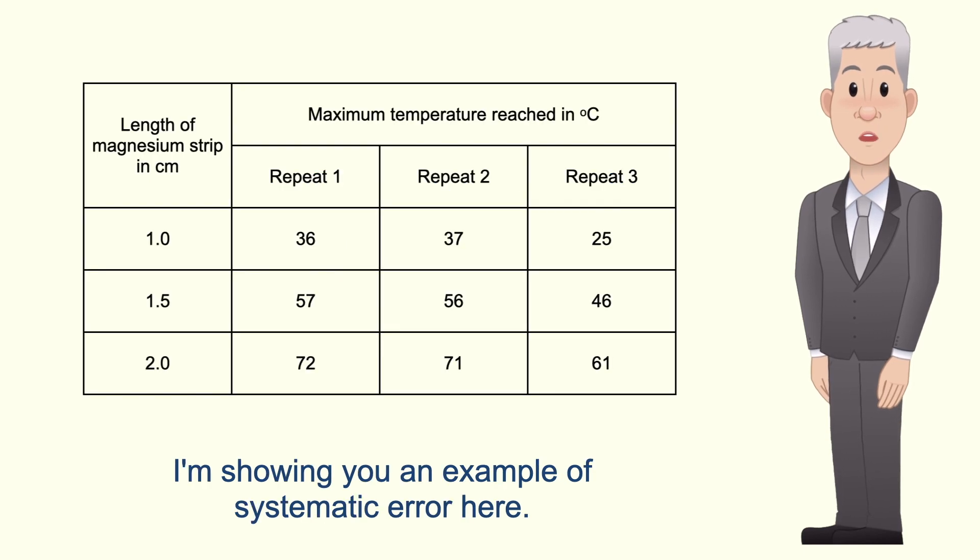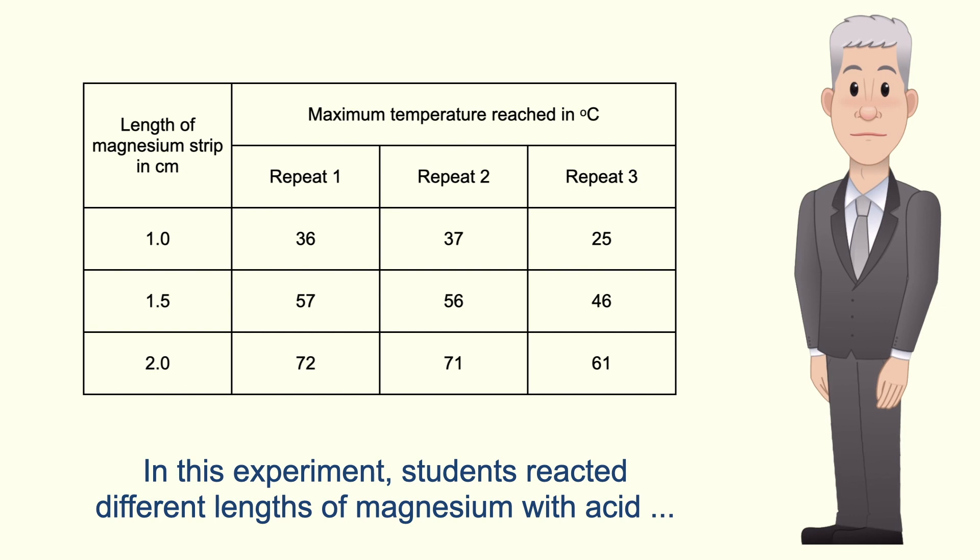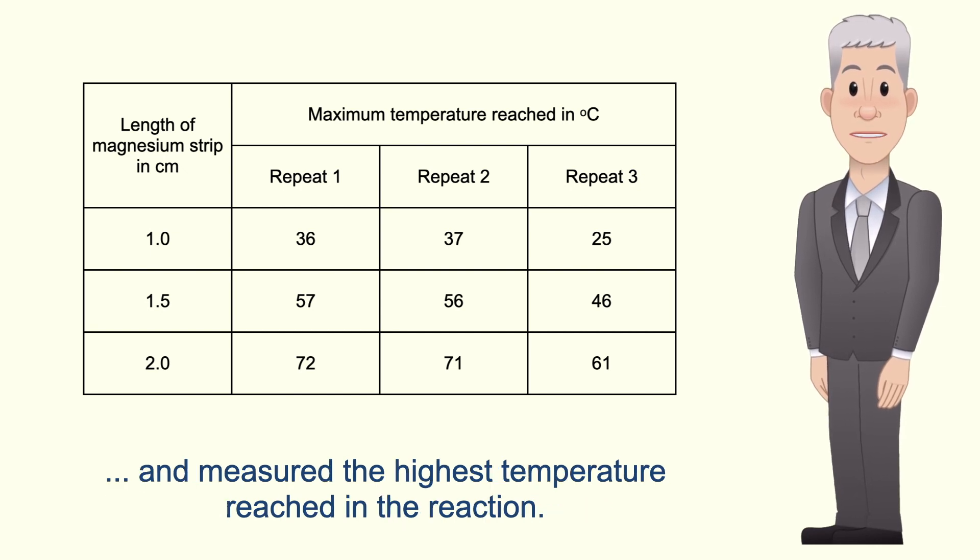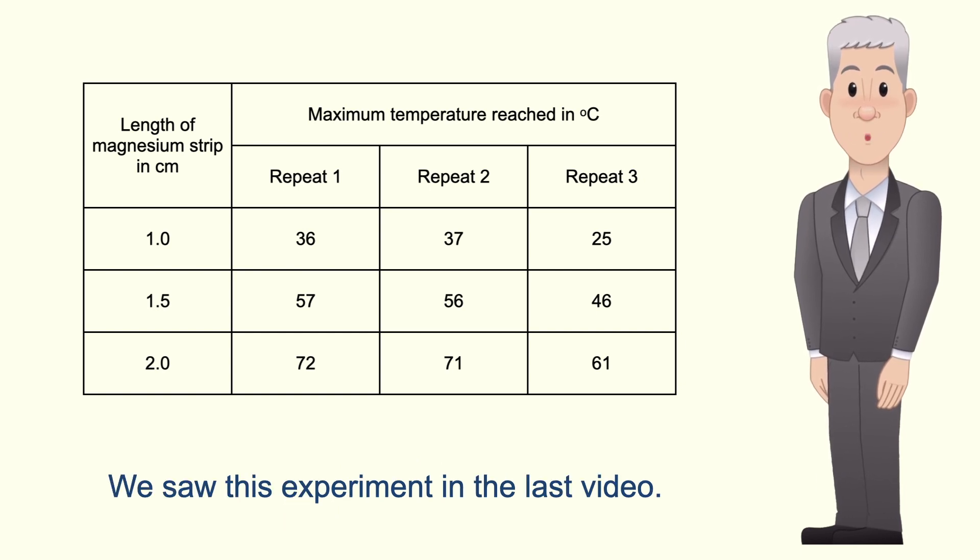I'm showing you an example of systematic error here. In this experiment, students reacted different lengths of magnesium with acid and measured the highest temperature reached in the reaction. And we saw this experiment in the last video.